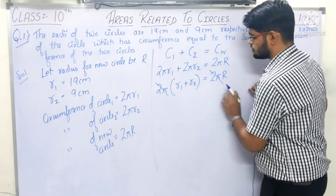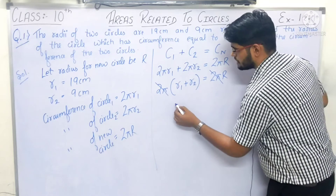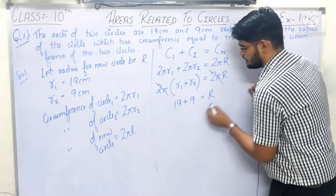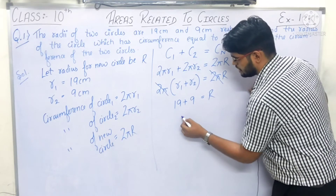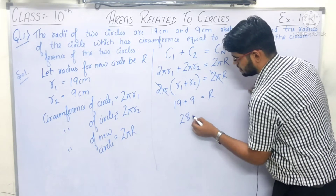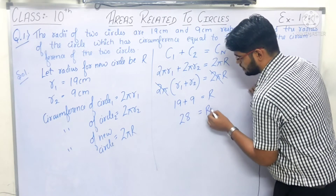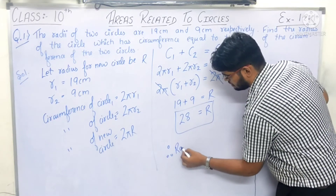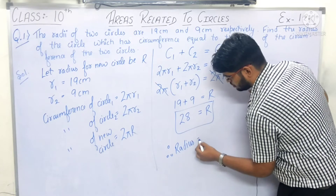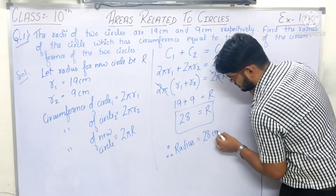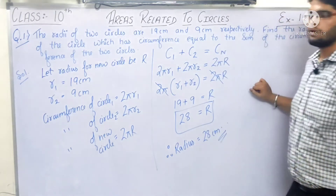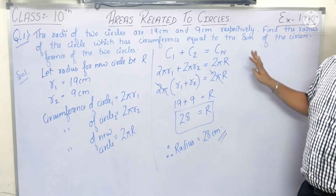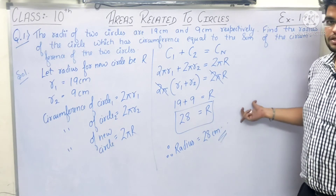So r1 + r2 = R (new circle radius). Substituting values: 19 + 9 = R, which gives R = 28. Therefore, the radius of the new circle whose circumference equals the sum of the circumferences of the two circles is 28 cm.